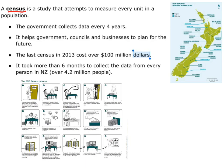From the government's point of view, they need to plan for whether there are enough hospitals, enough schools, and enough roading. So they need really accurate information to make decisions on. Because the census costs hundreds of millions of dollars and takes such a long time to collect, that's why they only do it every four years.